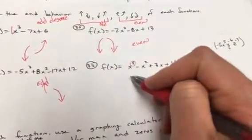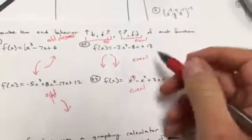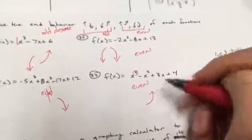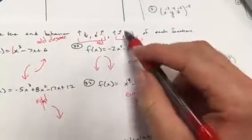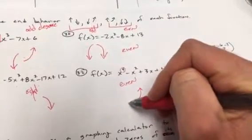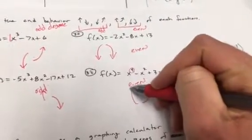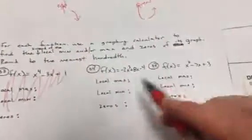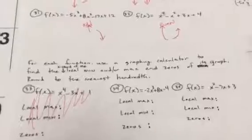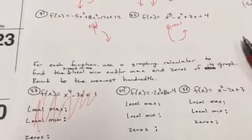Lastly, the fourth power is even — it's an even degree function and it's going to end by going up. They go in the same direction, so this one also goes up. In the last video I'll show you how to use your graphing calculator to help on ones like 34 and 35. 90.9 Quadratic signing out.